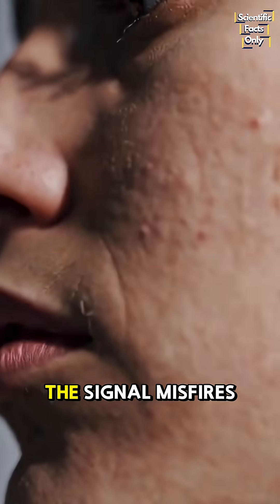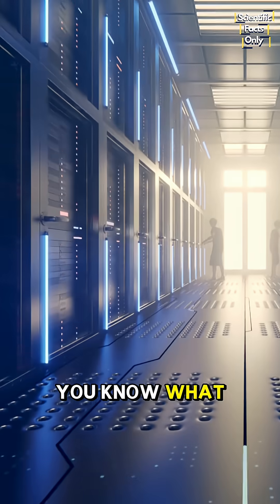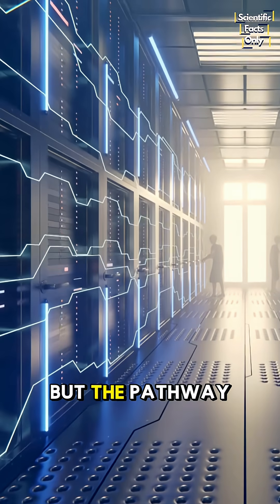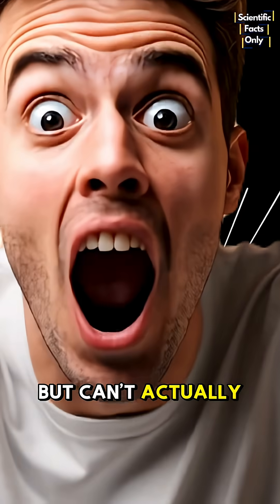But during a tip of the tongue glitch, the signal misfires. Your brain retrieves the meaning. You know what the word is about, but the pathway to the sound gets jammed. That's why you can describe it perfectly, but can't actually say it.